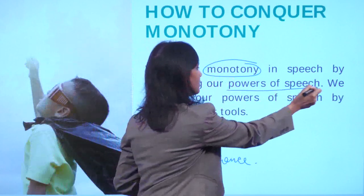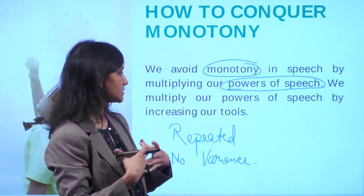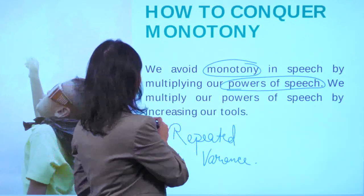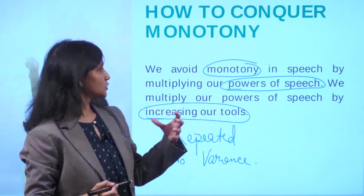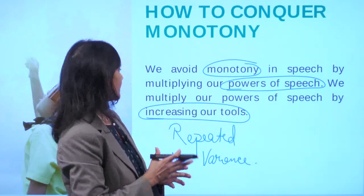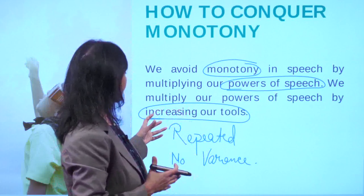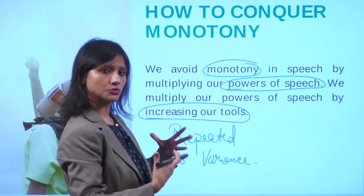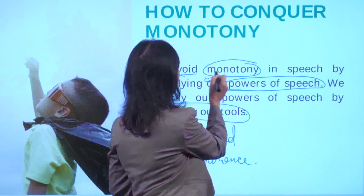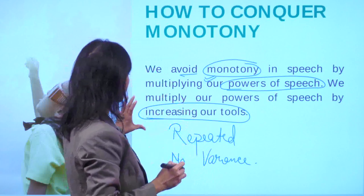We have been given the power of speaking and we have to multiply this — multiply the powers vested to us. We multiply our powers of speech by increasing our tools. So: how do we get rid of monotony in our speech? How do we multiply our powers of speech, and by multiplying, how do we increase our tools? There are three key ideas: avoid monotony, multiply our powers of speech, and increase our tools.